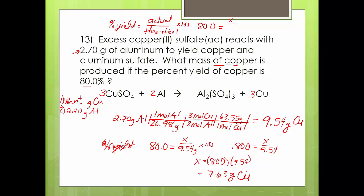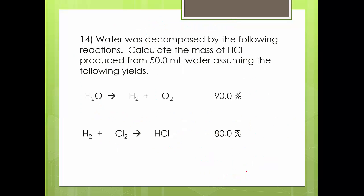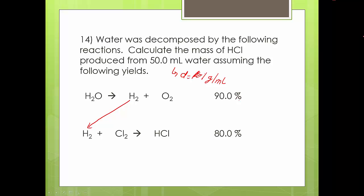Just different applications — same formula, plug it in, then rearrange to solve. Now I want you to work on these practice problems. A couple of things to note: the density of water is 1 gram per milliliter, so if you have 50 milliliters you have 50 grams. You'll need to balance both equations and look at what's in common — figure out how much hydrogen is made, take 90% of that, then do the stoichiometry to find how much hydrochloric acid. Really, this is two limiting reactant problems combined. This is where we'll start tomorrow.